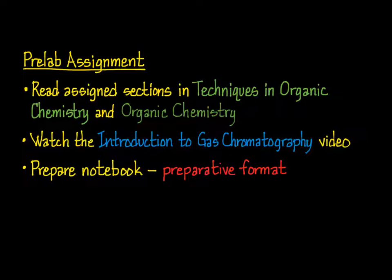These include drawing the main reaction, compiling a data table for reagents and products, and calculating the theoretical yield. With regard to that theoretical yield, you'll note that in this experiment, a single starting material produces multiple isomeric products. While you can't predict the theoretical yield of each individual product, you can predict the theoretical yield of all of the products combined, and that's what you should calculate.